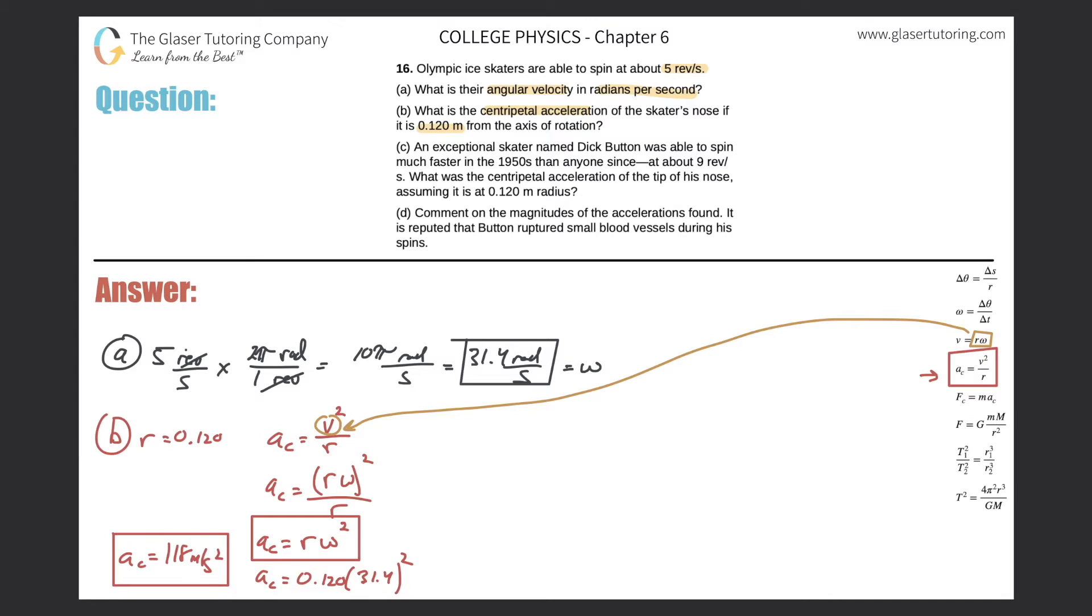Alright, let's move on to letter C now. It says, an exceptional skater named Dick Button was able to spin much faster in the 1950s than anyone else, about 9 revolutions per second. What was the centripetal acceleration of the tip of his nose, assuming it is at a 0.12 meter radius. So you might say, well, can't I just use a proportion here?